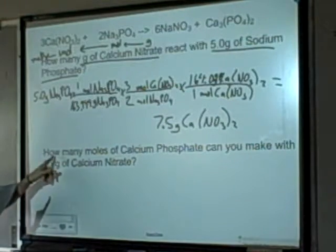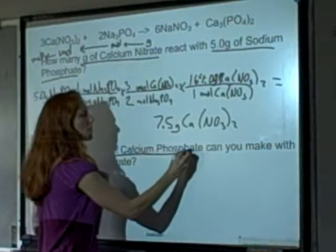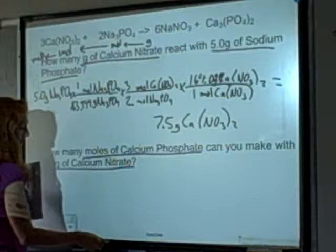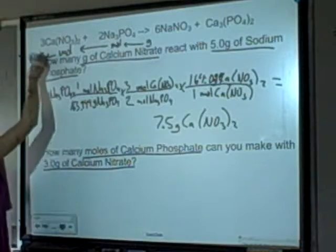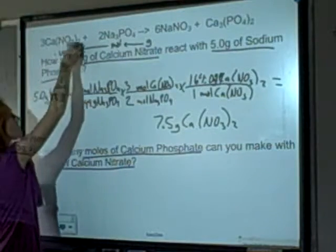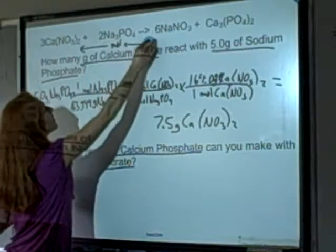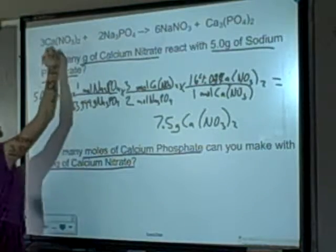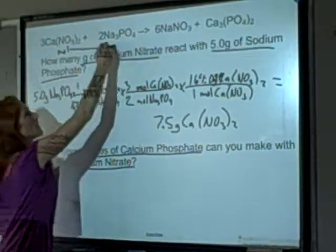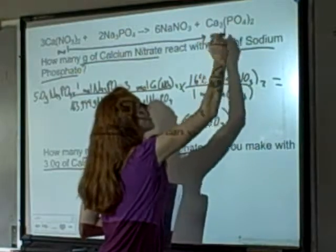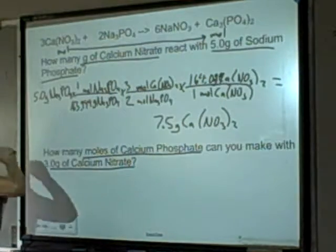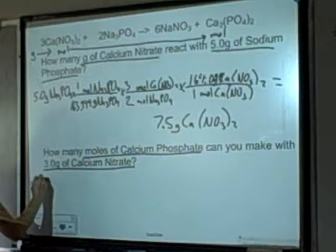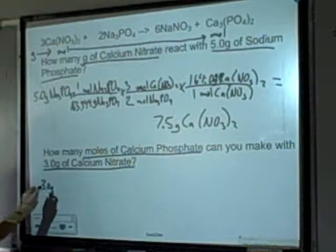Next: how many moles of calcium phosphate can you make with 3 grams of calcium nitrate? This time I'm starting with 3 grams of calcium nitrate and trying to get to calcium phosphate. At some point I'll go from moles of calcium nitrate to moles of calcium phosphate, but first I start with the grams. So I have 3 grams of calcium nitrate.